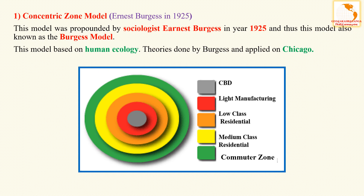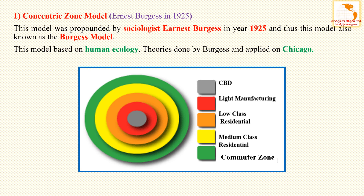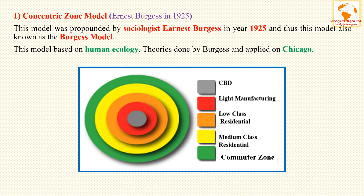This model was propounded by sociologist Ernest Burgess in the year 1925, and is also known as the Burgess model. It is one of the earliest theoretical models to explain urban social structure. This model is based on human ecology theories applied to Chicago. Burgess was the first to explain the distribution of social groups within urban areas. The concentric ring model depicts urban land use in concentric rings.